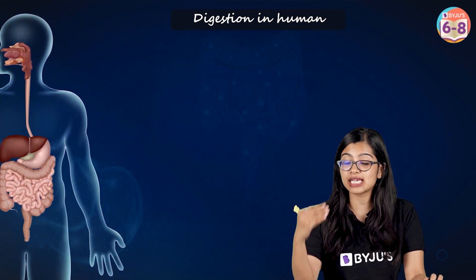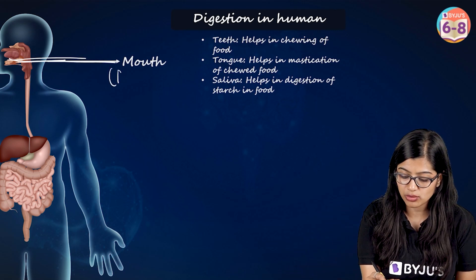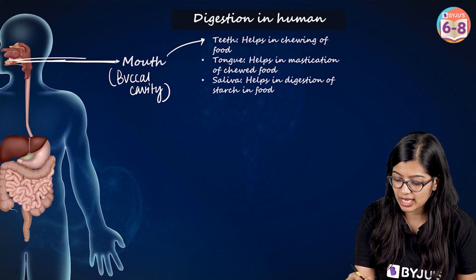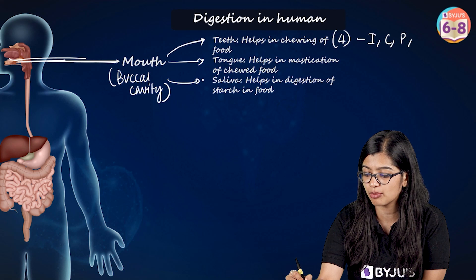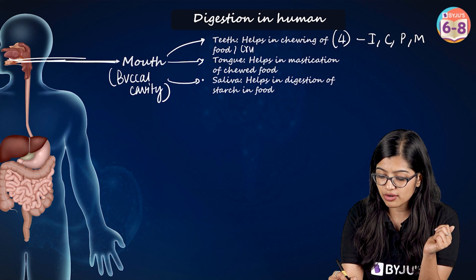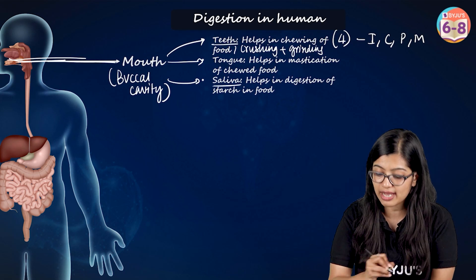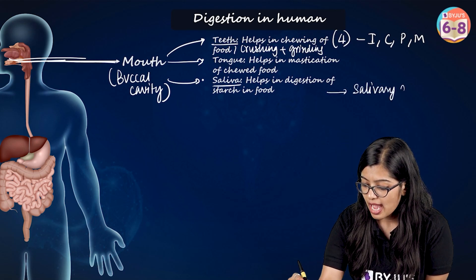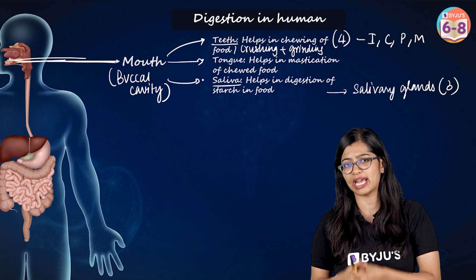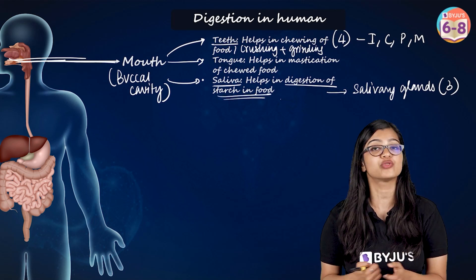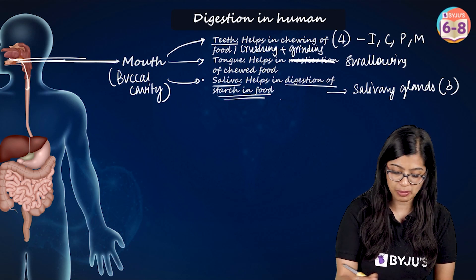The mouth opens into the buccal cavity and consists of three parts: teeth, tongue, and saliva. There are four kinds of teeth — incisors, canines, premolars, and molars — and they help in chewing, crushing, and grinding food. Saliva is a watery fluid produced by three pairs of salivary glands. It binds the chewed food together, contains digestive enzymes that help break down starch, and the tongue ultimately helps in swallowing the food.